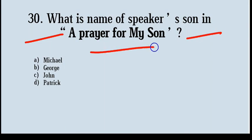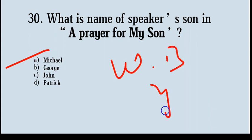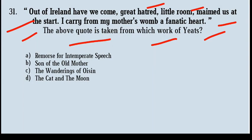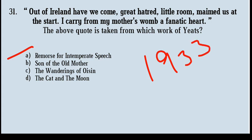What is the name of the speaker's son in 'A Prayer for My Son'? Options: Michael, George, John, Patrick. Correct answer: option number A, Michael. Michael Butler Yeats was an Irish barrister and politician and a son of W.B. Yeats. The quote — 'Out of Ireland have we come, great hatred, little room, maimed us at the start, I carry from my mother's womb a fanatic heart' — is taken from which work of Yeats? Options: Remorse for Intemperate Speech, Son of Old Mother, The Wanderings of Oisin, The Cat and the Moon. Correct answer: option number A, Remorse for Intemperate Speech. It is a poem written by W.B. Yeats, appeared in his 1933 volume of poems 'The Winding Stair and Other Poems'. Yeats also wrote this poem in August 1931.